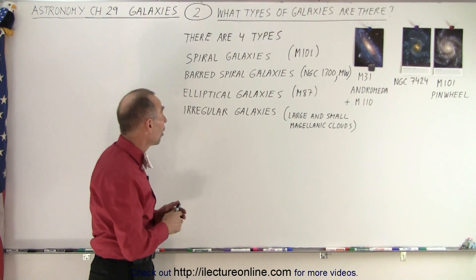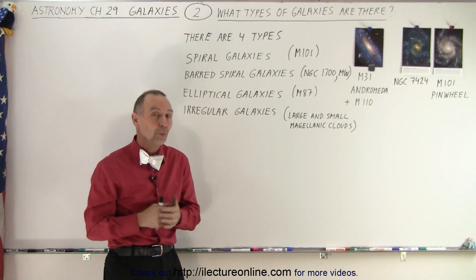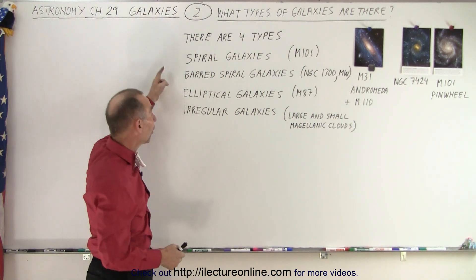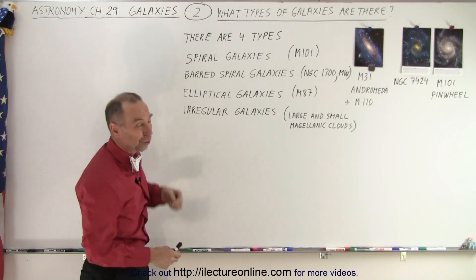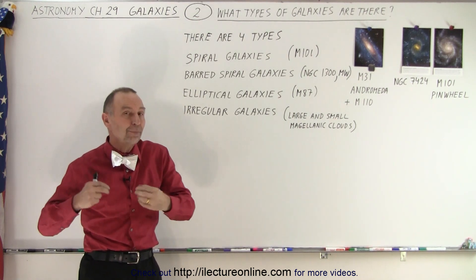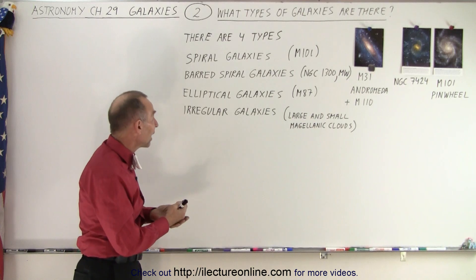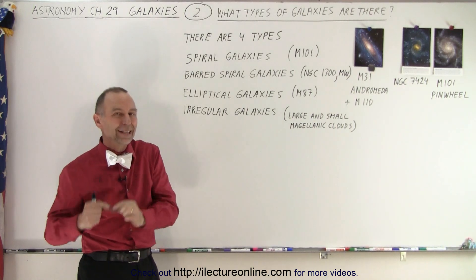The first two that we have on the list are spiral galaxies. One of them, the top one here, are regular spiral galaxies—we don't call them regular, we simply call them spiral galaxies. And the other type are barred spiral galaxies.